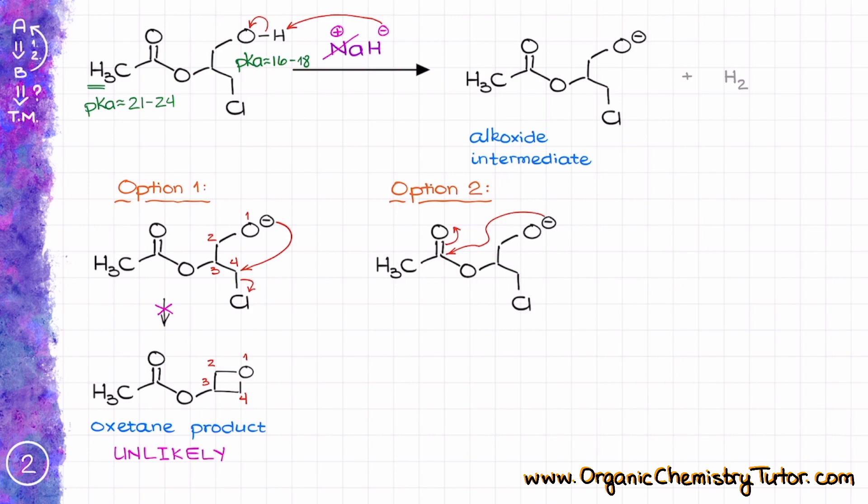Another option would be the attack on the ester group, which results in a tetrahedral intermediate that is characteristic for chemistry of carboxylic acids and their derivatives. And as this is a five-membered ring intermediate, there are no problems with its formation.